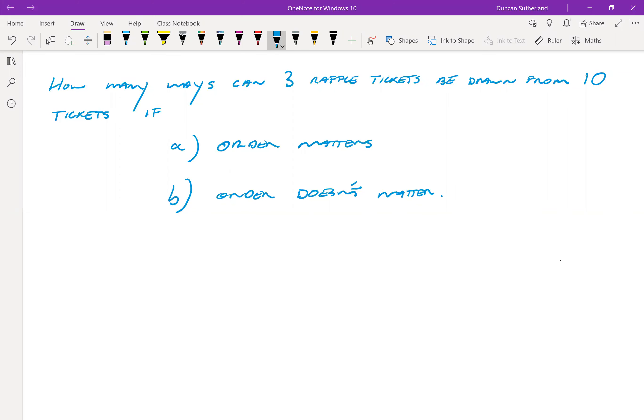So order matters in the first case. Order does not matter in the second case. So if A, there's 10 ways to choose the first prize. Then there's nine ways to choose the second prize. There's eight ways to choose the third prize.